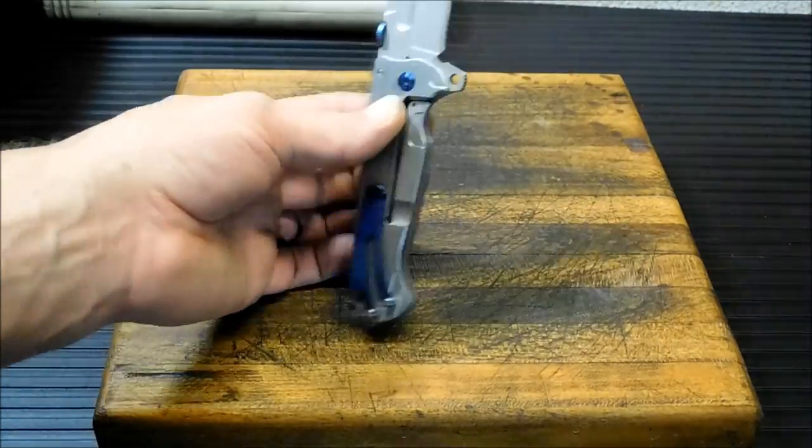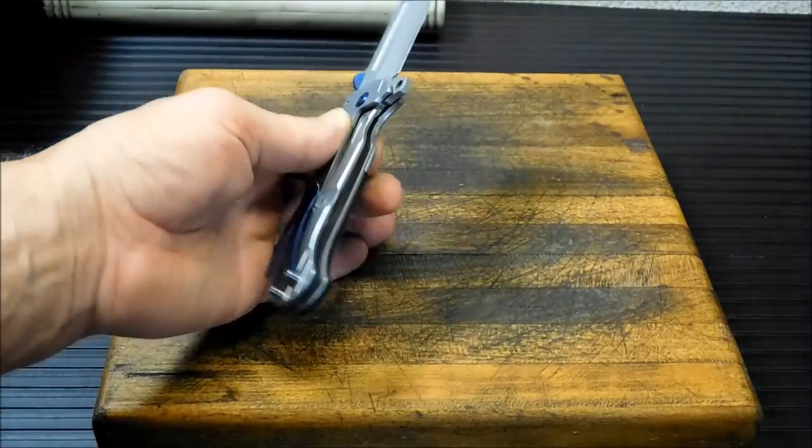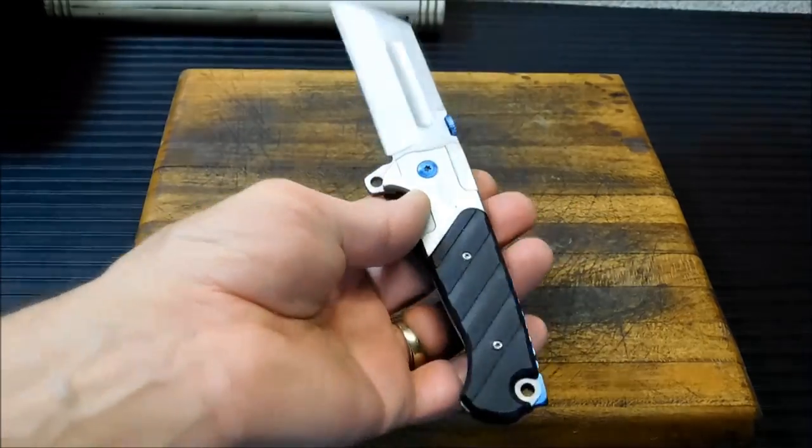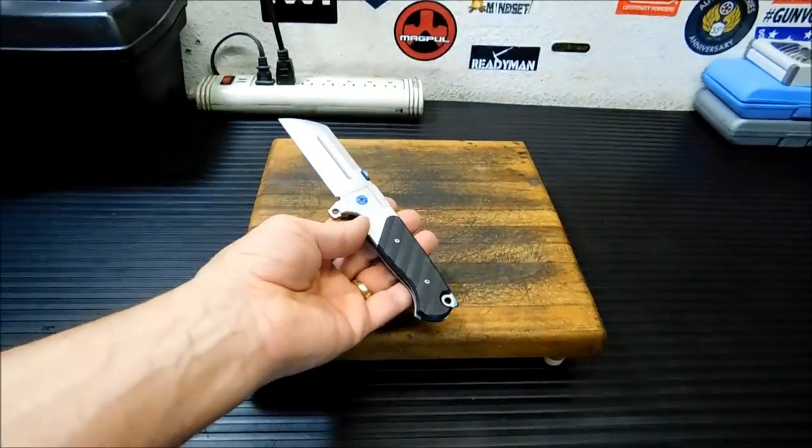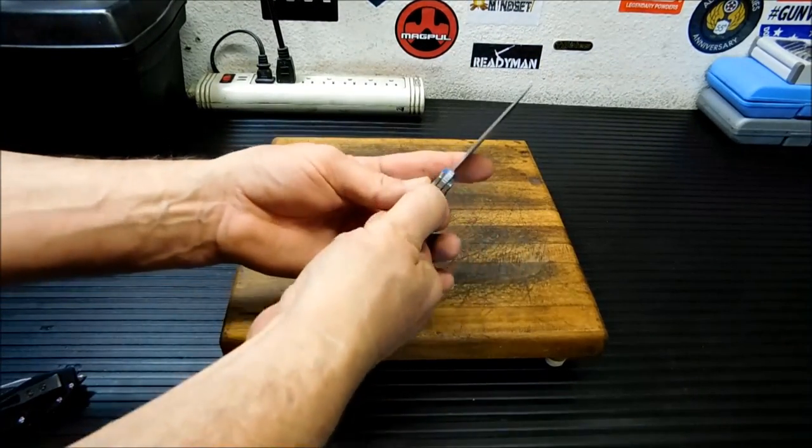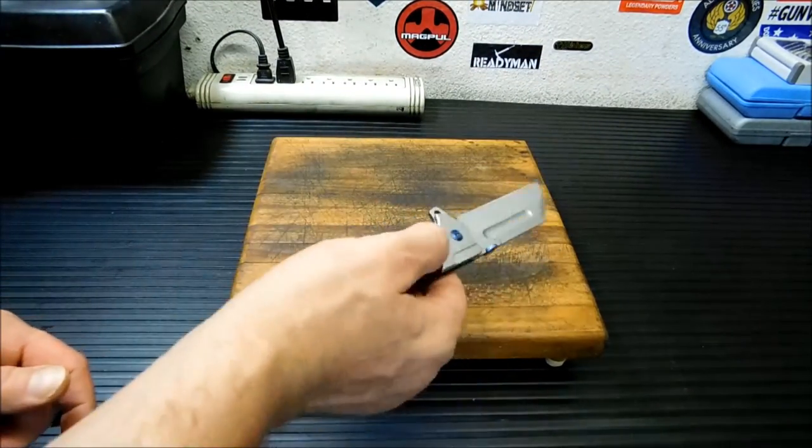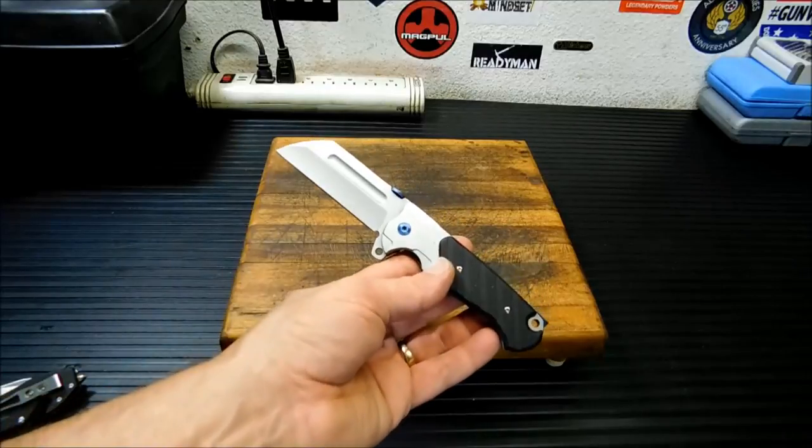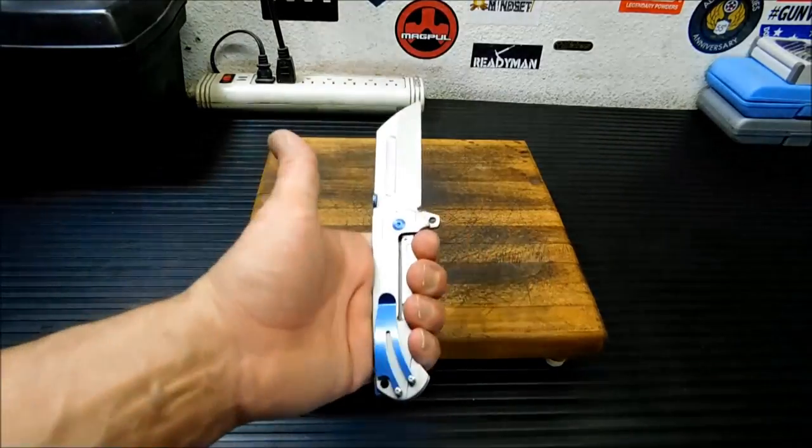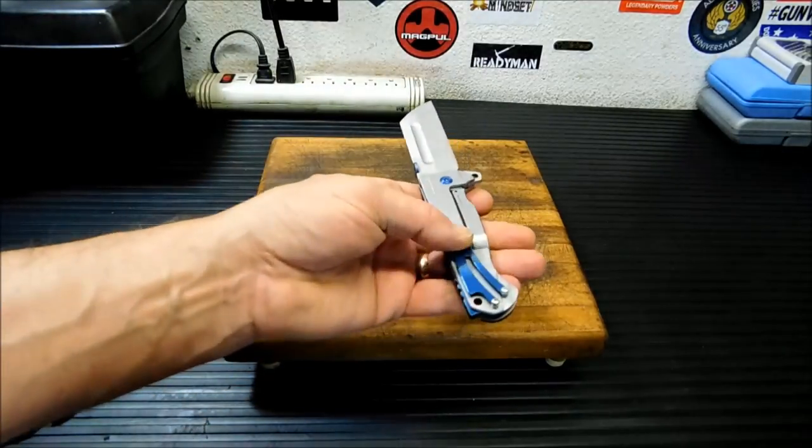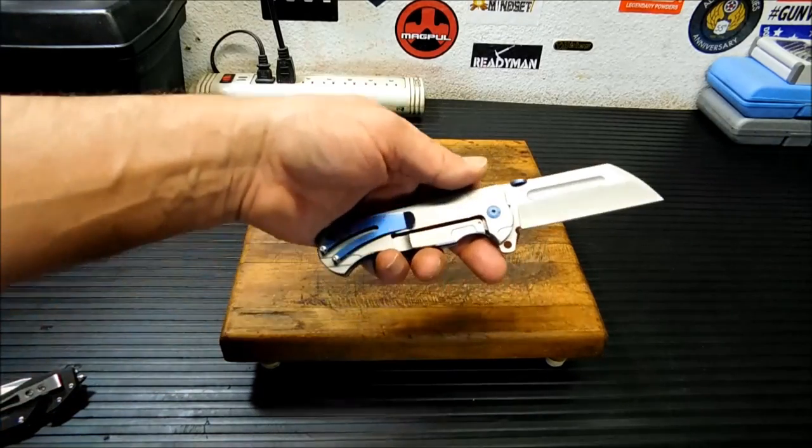So that is the M831 Tactical Flipper Knife. It does have a nice flipper action. I'm going to zoom out again so you guys can see. Let's fold it up. It flips right out. And I like the blade. I like the heft to it. I kind of like the blue accents on it, on the clip.